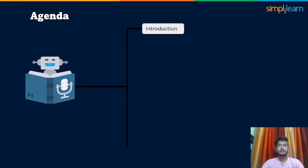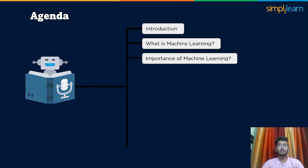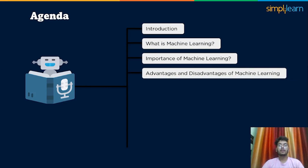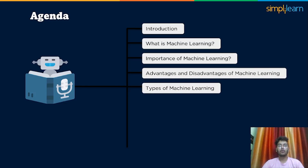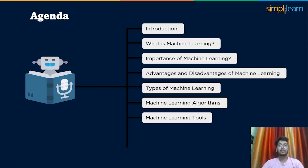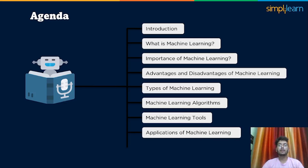First, we will discuss what machine learning is. Then we will move ahead to understand the importance of machine learning. To learn any technology, it is important to know its advantages and disadvantages. We will continue our session by understanding the different types of machine learning, followed by some important machine learning algorithms. We will also have a look at some important machine learning tools, a quick look at the applications of machine learning in our day-to-day life, and finally, what the future of machine learning holds.